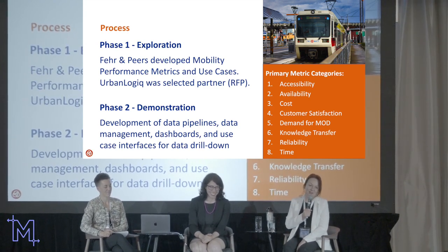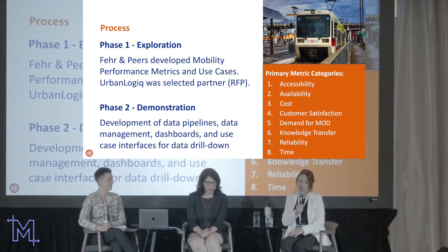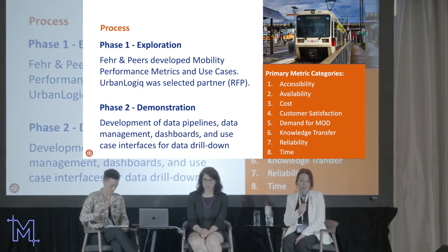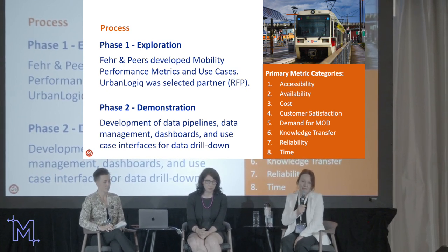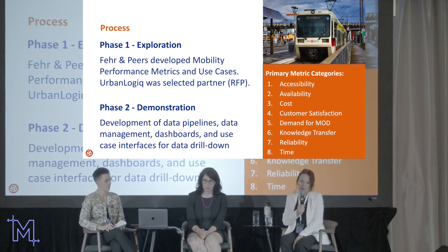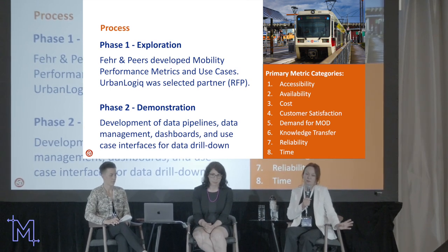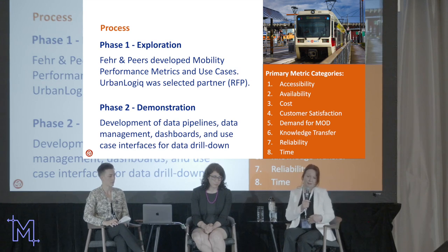This first phase last year was exploration. Fehr & Peers developed mobility performance metrics and use cases through interviews and workshops, also working off FTA documentation and research. We did an RFP and Urban Logic — a Canadian company — was selected as our partner. We rolled it up into eight primary metric categories. We've now just started the phase two demonstration phase and have already developed data pipelines into our platform, data management, data dashboards, and use cases for further data drill-down — including total journey time by mode, dwell times, accuracies, customer satisfaction, and accessibility down to wait times for ADA transportation options.